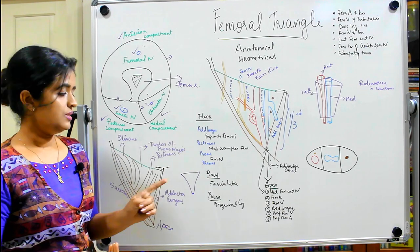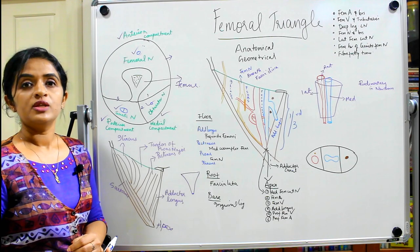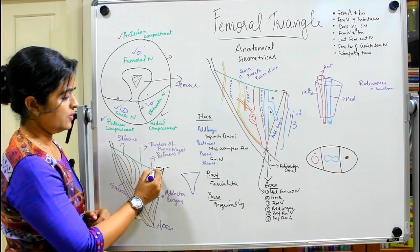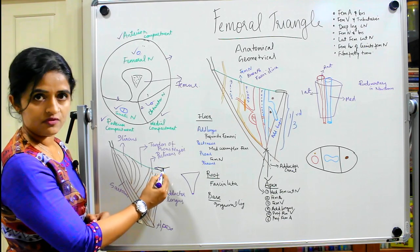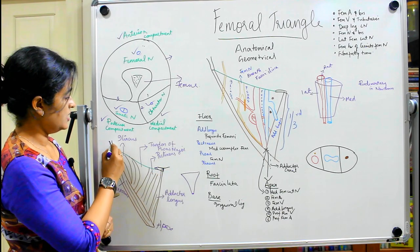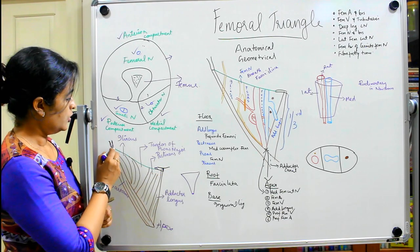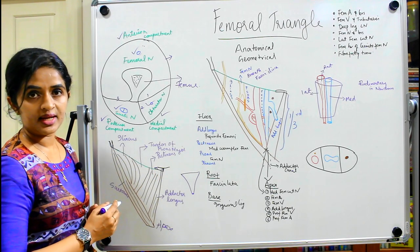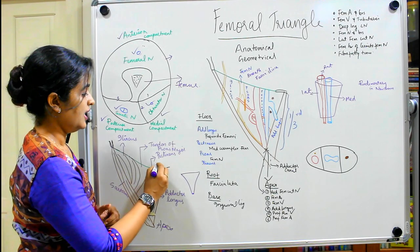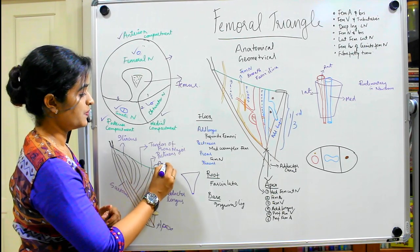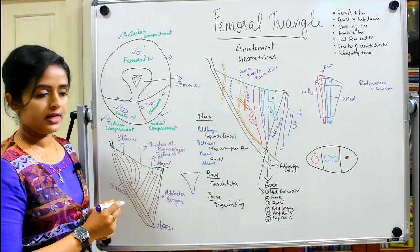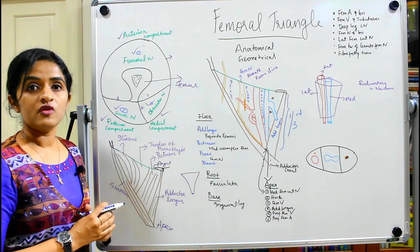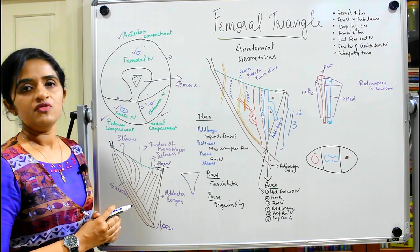Since it is a triangle, we will now talk about the boundaries. We have the pubic tubercle, the pubic symphysis, and the anterior superior iliac spine. The main ligament connecting the pubic tubercle with the anterior superior iliac spine is the inguinal ligament, and this forms the base of the femoral triangle.